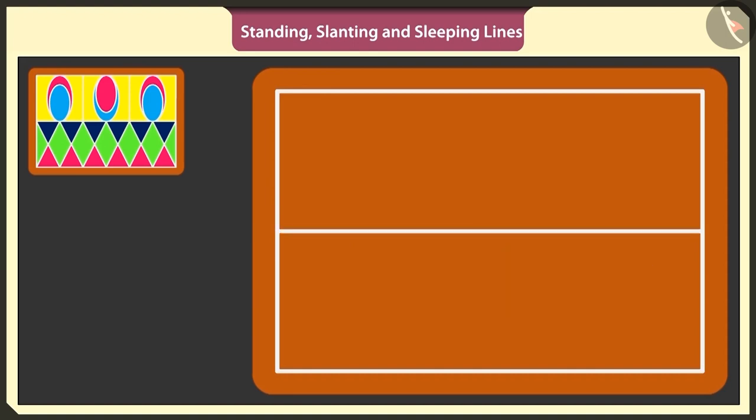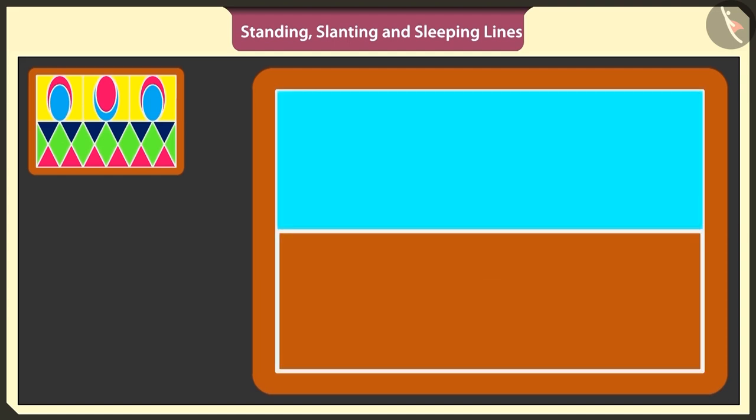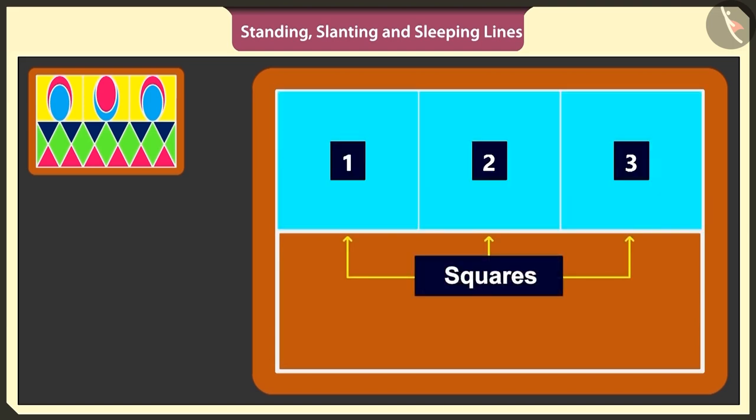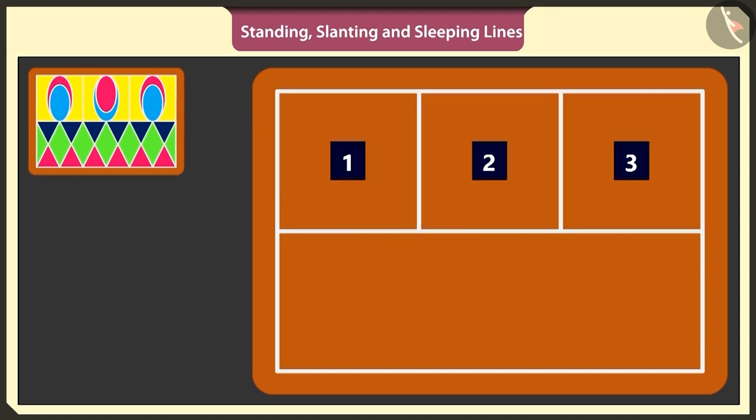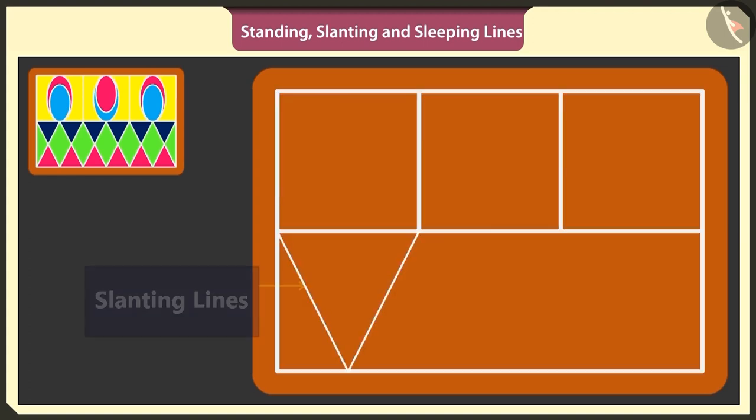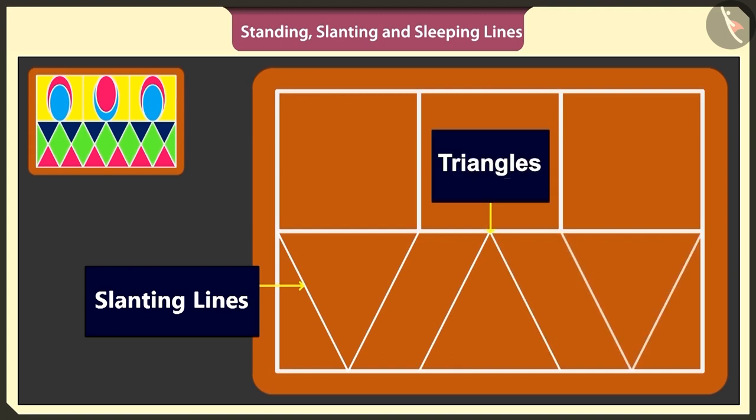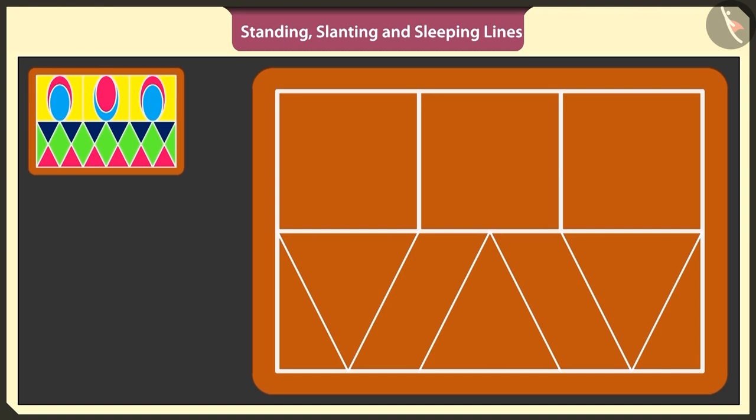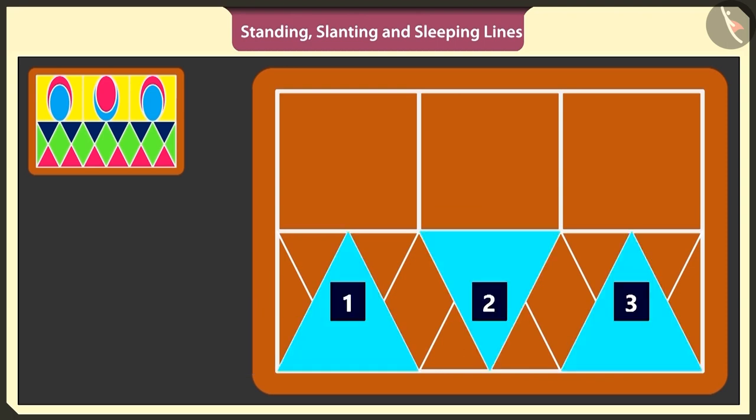Yes, now we have two rectangles. Draw two standing lines in the above rectangle and make three such small squares. Now, under these three squares, I will draw three triangles, just like this. I will use slanting lines to make inverted triangles, just like this.